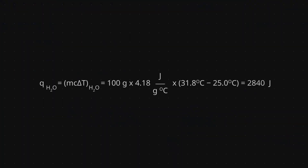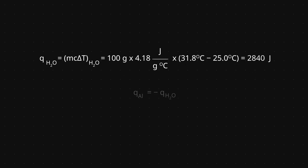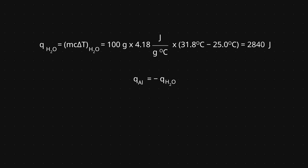Rearranging the specific heat equation lets me determine the heat absorbed by the water, which equals mass times specific heat times temperature change of the water. The heat of the water is equal to 2840 joules. If no heat escapes, then the heat of aluminum and the heat of water are equal in magnitude but opposite in sign.